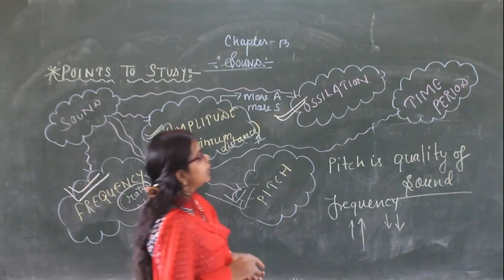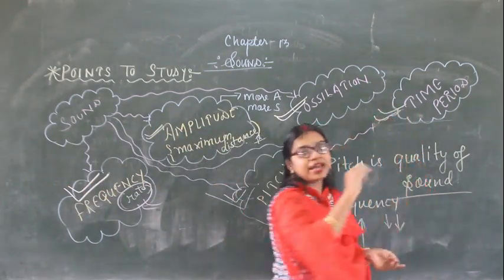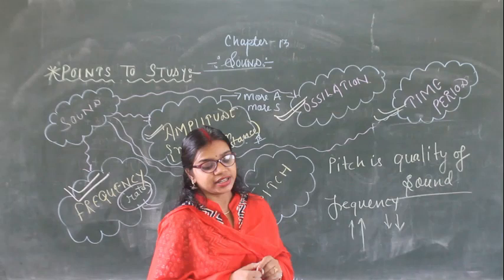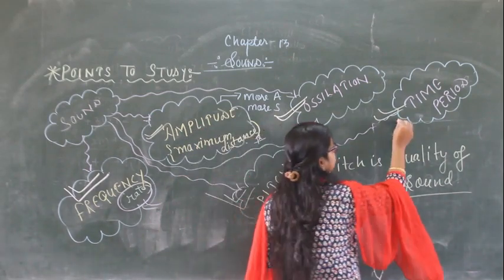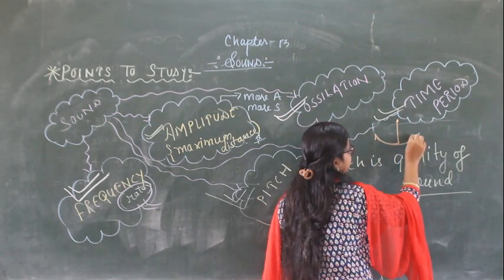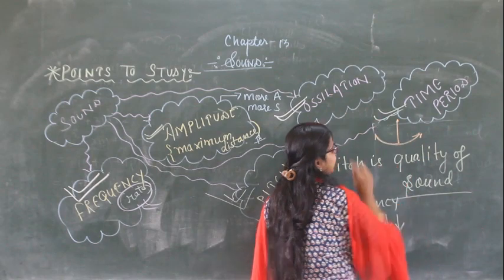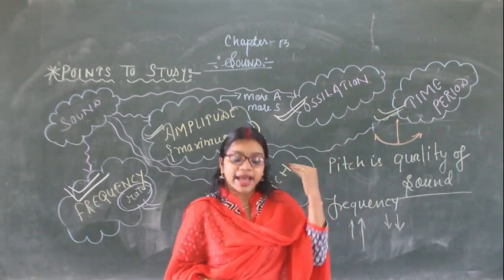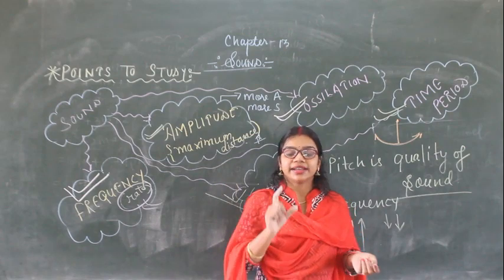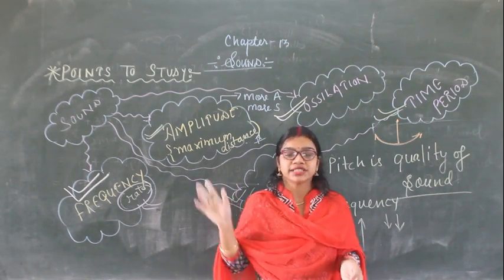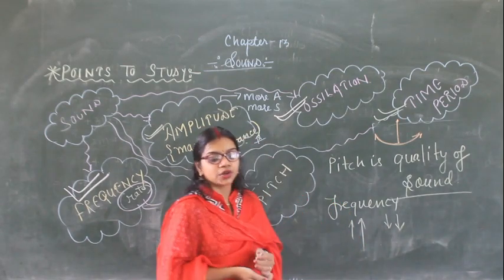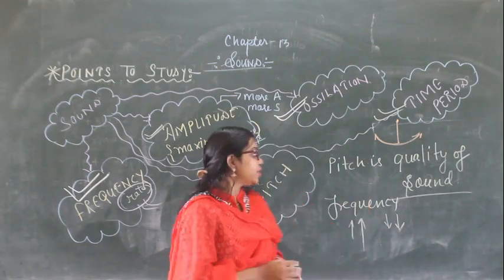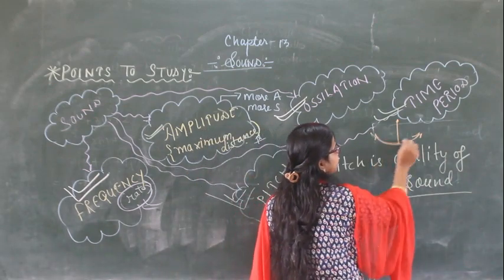What is time period? Time period is the time taken by a pendulum to complete one complete oscillation. Suppose this is the pendulum - it moves here and then it moves here, and it returns back to its original place. So one total oscillation completing is known as the time period. The time taken by a pendulum to complete one total complete oscillation is known as the time period - from one extreme end to the other end and back again.